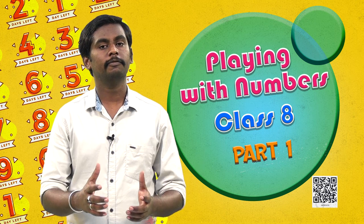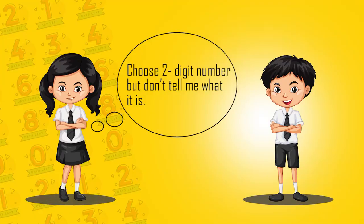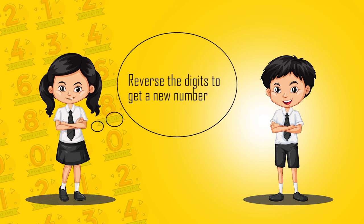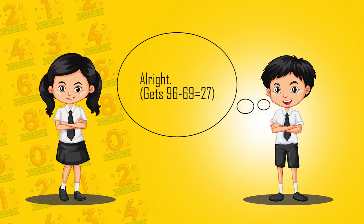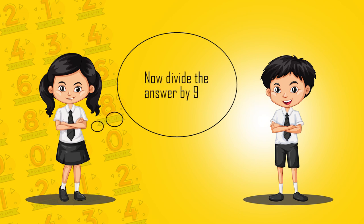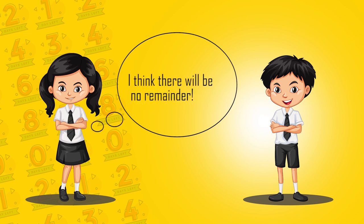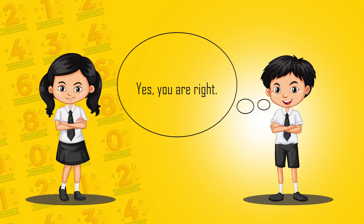The game between Meenakshi and Sundaram did not end. You can also play with her by following her instructions. Choose a two-digit number, but don't tell me what it is. All right. Reverse the digits of the number to get a new number. Okay. Subtract the smaller number from the larger one. All right, I have done the subtraction. What's next? Divide the answer by 9. Okay. I claim there will be no remainder. Yes, you are right.